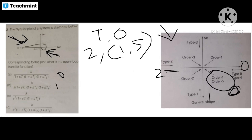The third option has S², meaning the number of poles at the origin is 2 — this is a type 2 system. The fourth option also has S², so it is also a type 2 system. What is the type 2 system? The first two options are eliminated. From the last two options, we will find the answer. Type 2 is the third option.